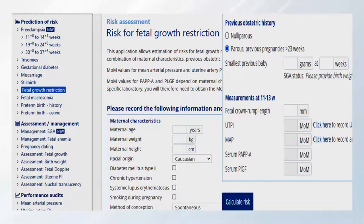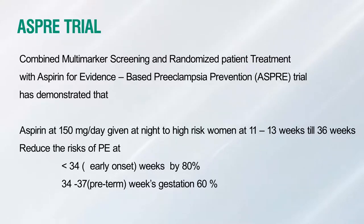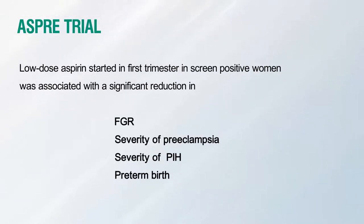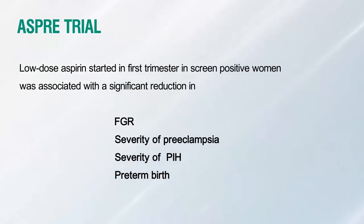The cutoff used for preeclampsia by FMF is 1 in 100, but under Samrakshan we use a cutoff of 1 in 150 for both PE and FGR. If the risk is between 1 in 1 and 1 in 149, the patient is high risk and should be started on low-dose aspirin. Trials have shown that 150 mg aspirin every night until 36 weeks reduces early-onset preeclampsia by 80 percent and preterm preeclampsia by 60 percent. Low-dose aspirin in screen-positive women is also associated with significant reduction in FGR severity, preeclampsia, PIH, and preterm birth, and delays the development of preeclampsia. Therefore, Samrakshan recommends starting low-dose aspirin in screen-positive cases for both preeclampsia and FGR.